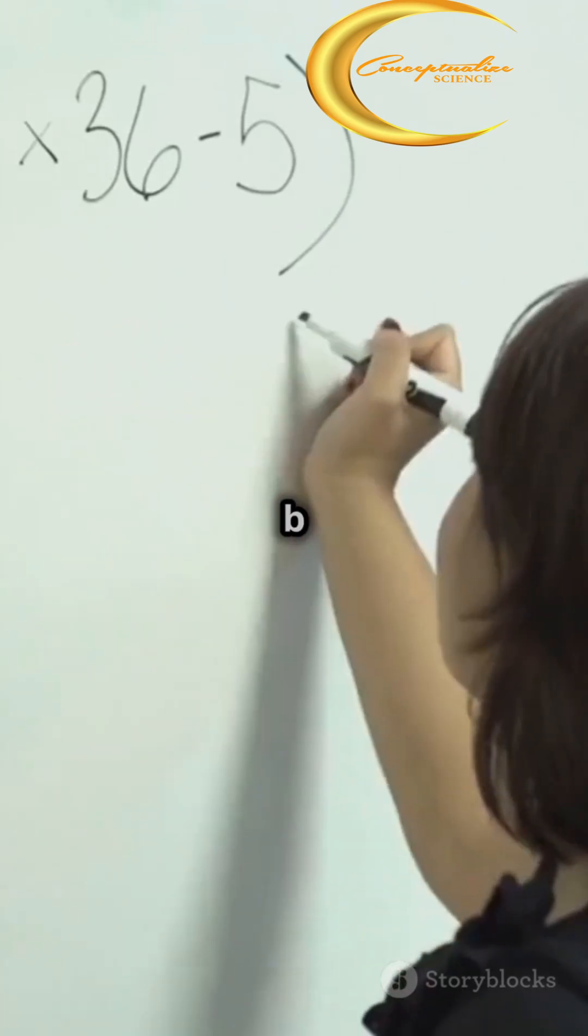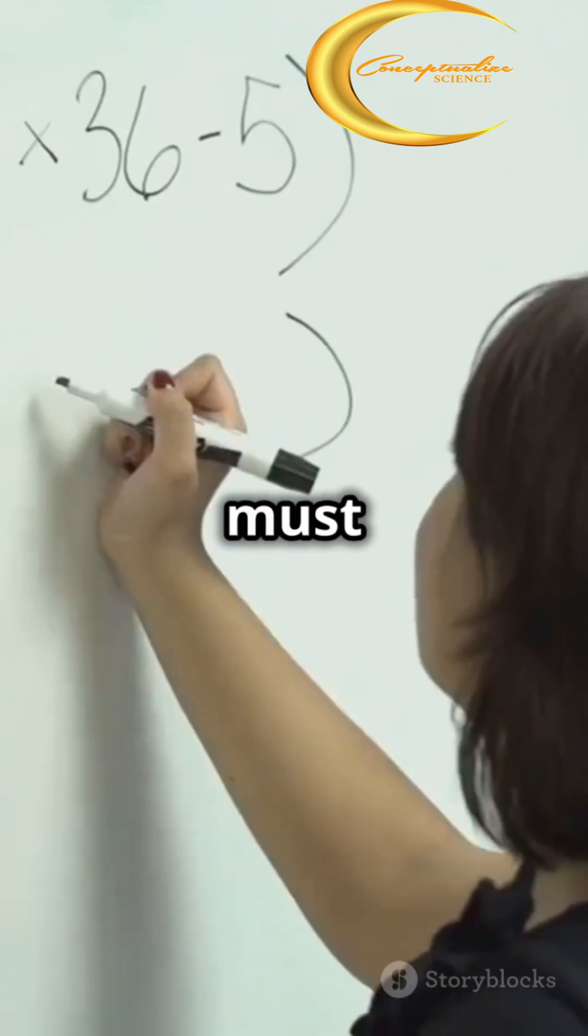So, logically, division is just the flip side of multiplication. If A×B equals C, then A must equal C÷B.